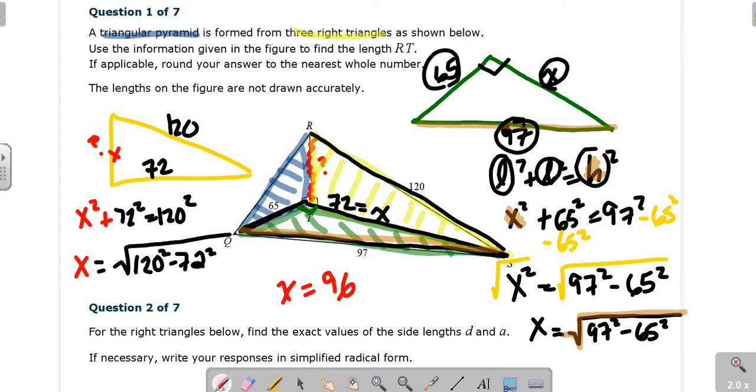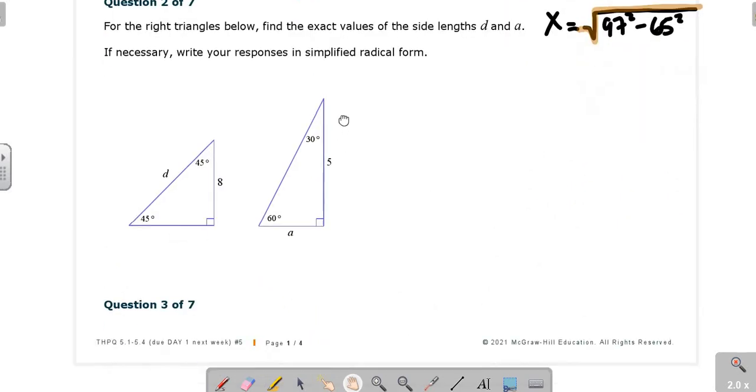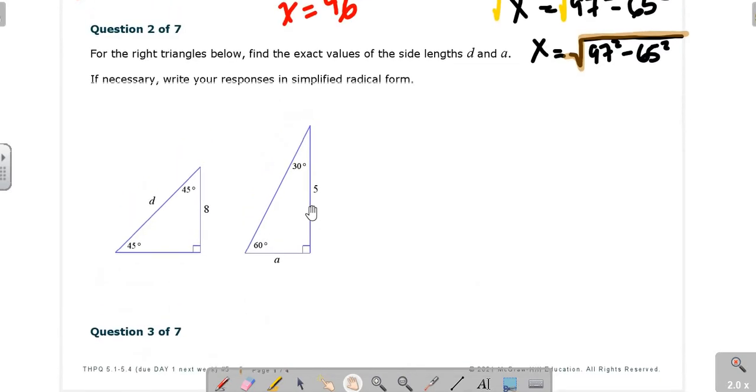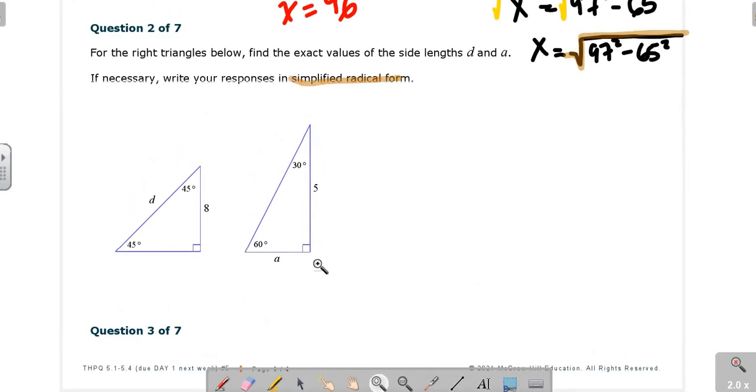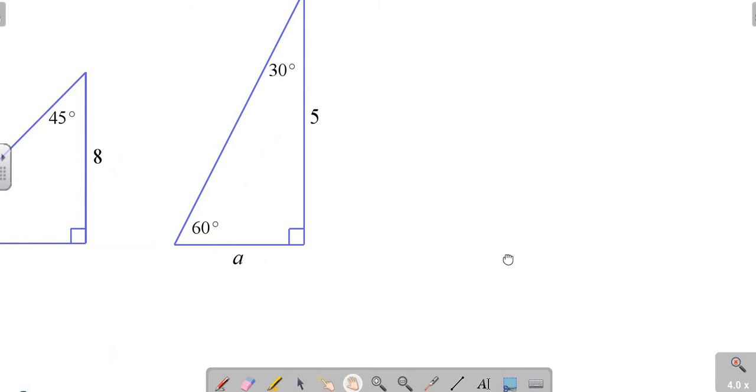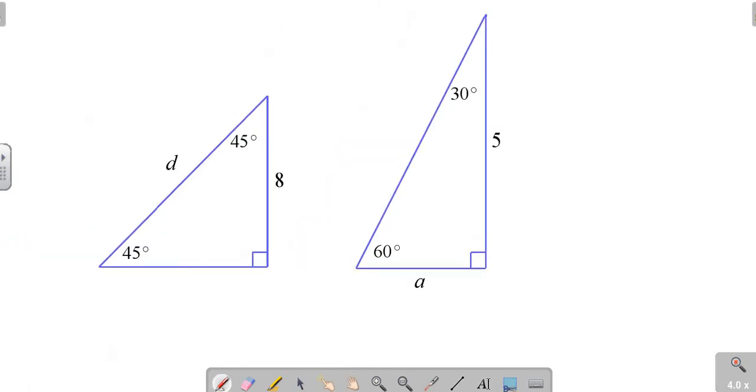Taking a look at the next two problems. They're 45-45-90, 30-60-90. Your answer in simplified radical form. On the left, 45-45-90. Leg, leg, leg root 2. So the legs are equal. So if this is 8, down here must be 8. And the leg to the hypo is 8 root 2. So the correct answer for D would be 8 root 2.